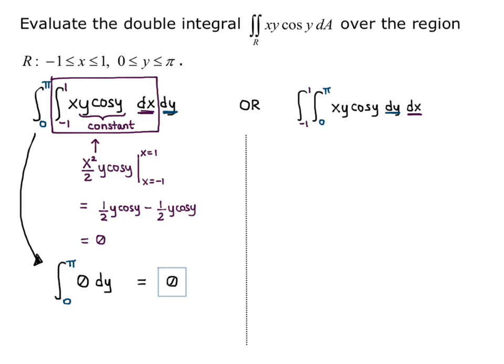Now on the right hand side, when I am doing the integral with respect to y first, I have to use integration by parts. Because I have xy, where y is a variable, times cosine y, and y is a variable. So I would say u equals xy, dv equals cosine y dy.